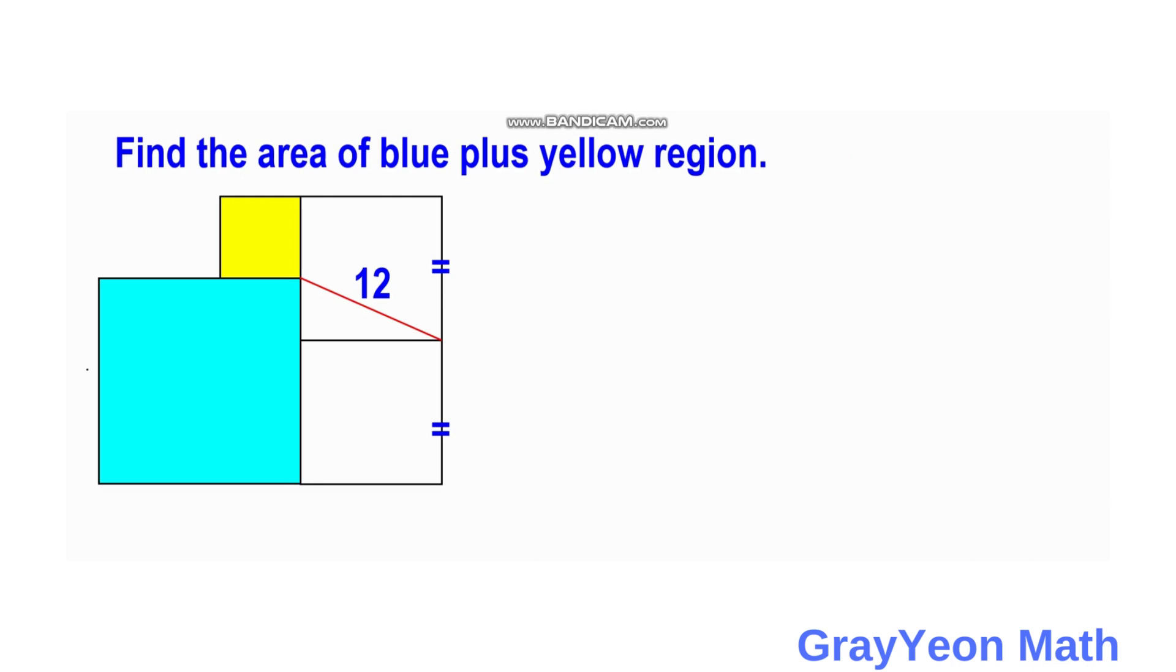So first thing that we have to do is we need to label the figure. We label the length of this blue square as A and this yellow square as B.